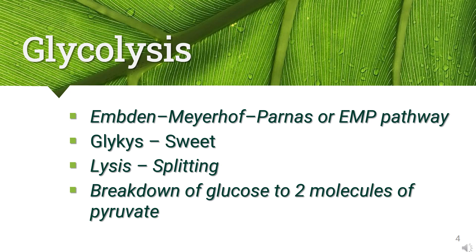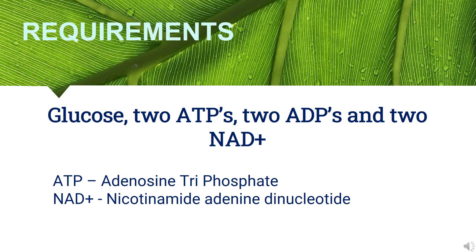Glycolysis is a metabolic pathway discovered by three German biochemists — Gustav Embden, Otto Meyerhof, and Jakub Karol Parnas — in the early 19th century, and is known as the Embden-Meyerhof-Parnas or EMP pathway. The word glycolysis: 'glyco' means sweet, 'lysis' means splitting. Glycolysis is a process where a glucose molecule is broken down to form two molecules of pyruvate.